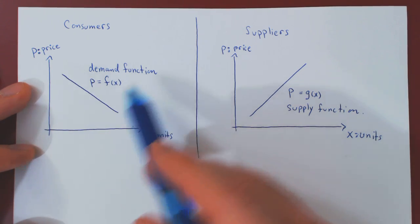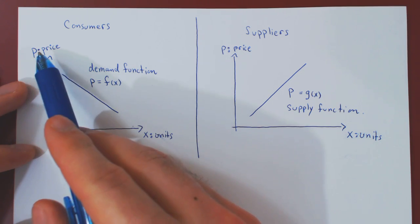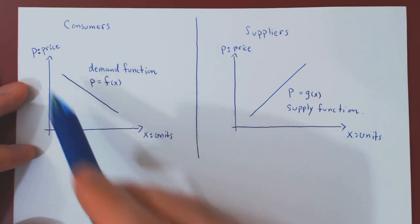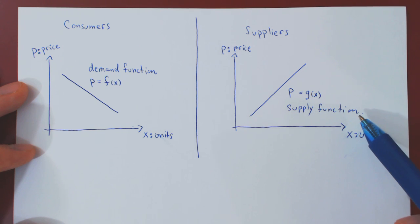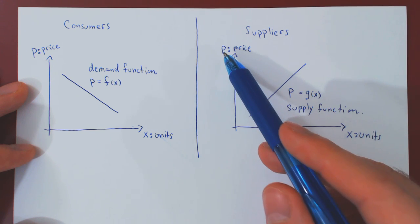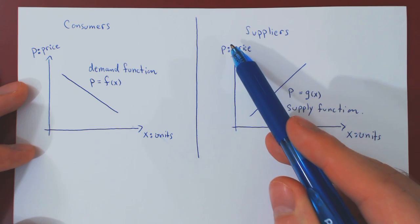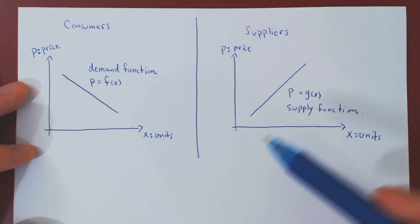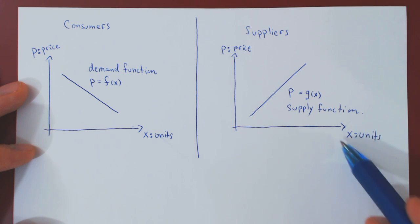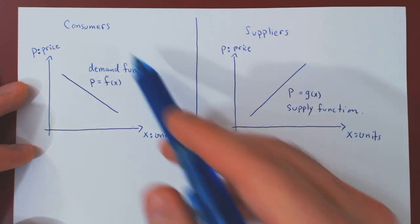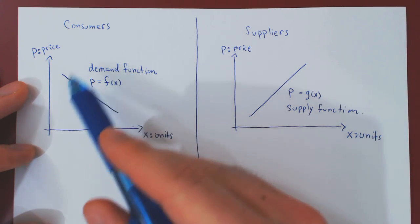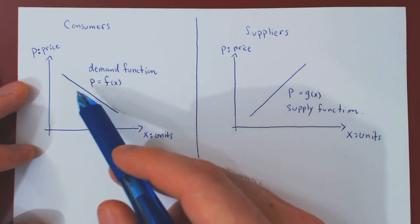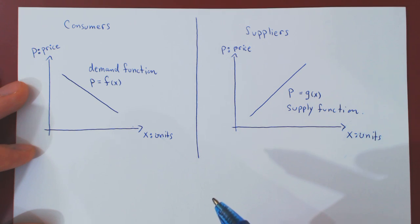So the demand function is a negative relationship between the price of a single unit and the number of units that consumers are willing to purchase. The supply function is a positive relationship between, once again, the unit price and X, the number of units that suppliers are willing to sell to consumers. And there is a very important quantity related to both the demand function and the supply function, and that is the idea of an equilibrium point.